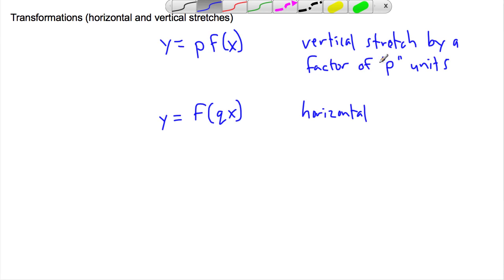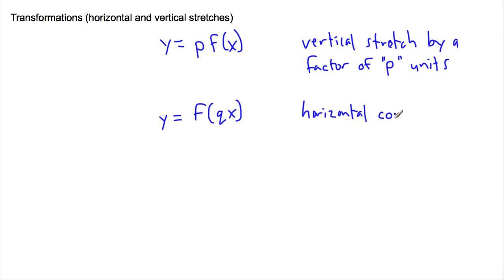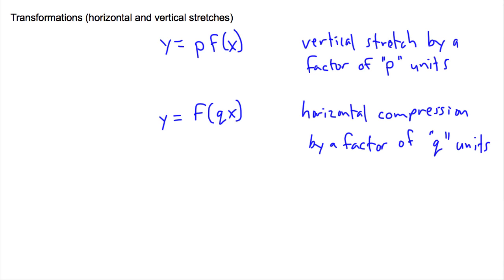Outside the brackets, the transformation works like you'd expect: put a 2 there and it stretches by 2; put a 5 and it's five times stretched up and down. But inside the brackets, if you put a number like 2, it's the opposite — it's a horizontal compression, squished by a factor of q units.